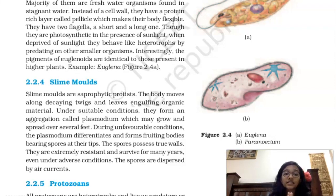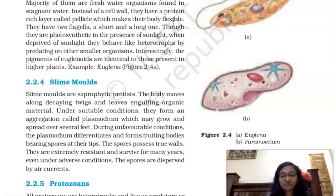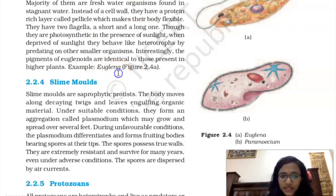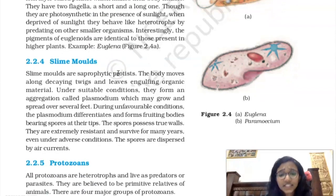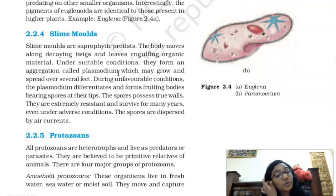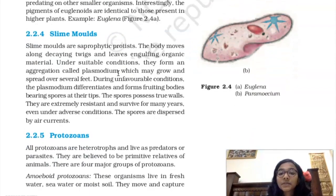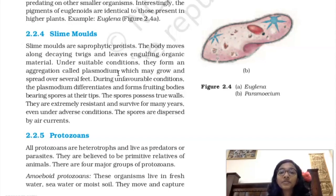Since Protista doesn't have well-defined boundaries, Euglenoids serve as a connecting link between Protista and Plantae. Moving on, slime molds are the first saprophytic protists — saprophytes depend on dead and decaying matter for nutrition. They grow among decaying twigs and absorb the organic content present in them.